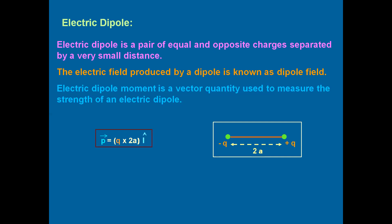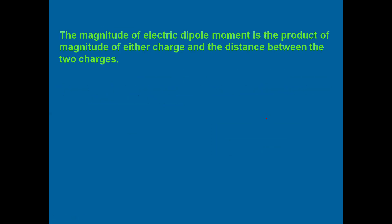The magnitude of dipole moment is P = Q × 2a, that is charge multiplied by the distance between the two charges. Its direction is along the line joining the negative and positive charge — that is, from negative to positive. So P = 2qa is the magnitude, and direction is from negative to positive charge.